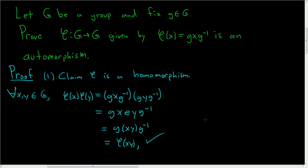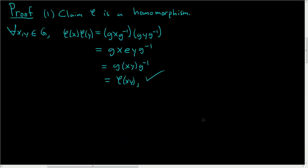Now we'll show it is 1 to 1. Claim 2: φ is 1 to 1, or injective. So let's start by supposing that φ(x) is equal to the identity, and we'll show that x must also be the identity. So suppose φ(x) is equal to the identity element in G.